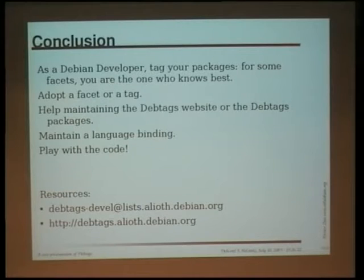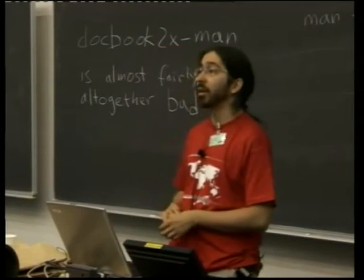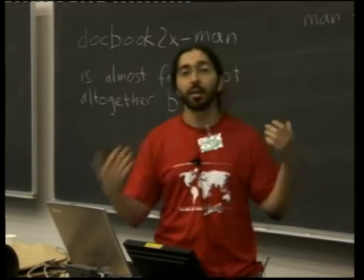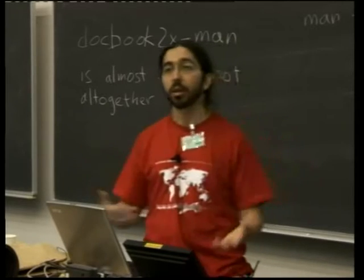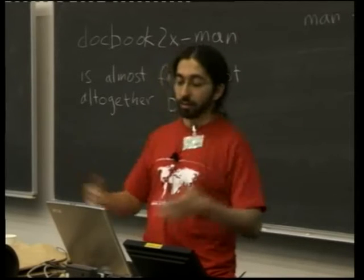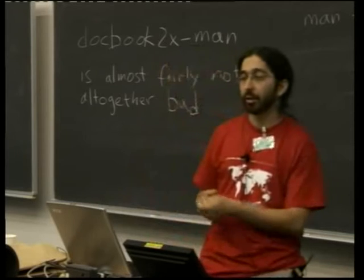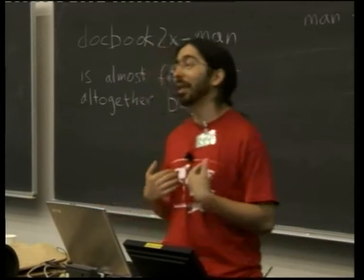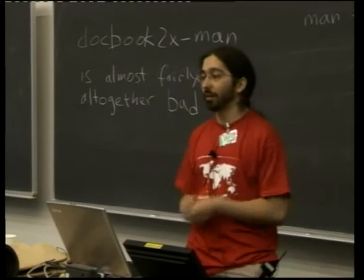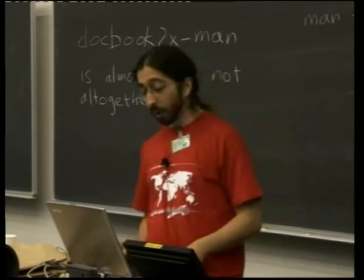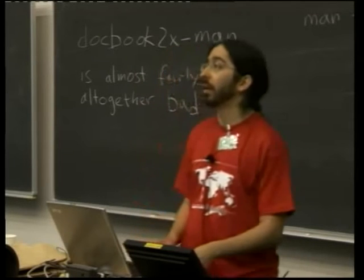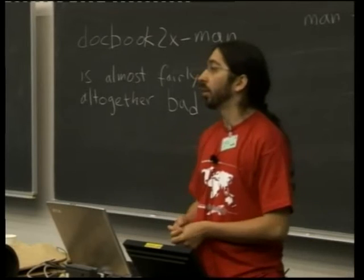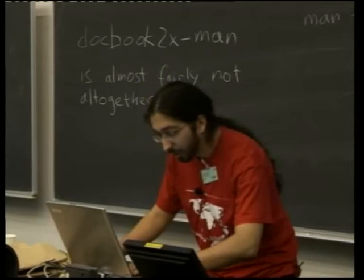Adopt a facet or tag — we can not only adopt packages but also facets or tags. For example, if you are an artist who knows about everything to do with images, you can adopt the 'works with image' tag and make sure that packages which deal with images actually have that tag. Also, help with the website — totally underdeveloped. The core packages are very well maintained because I do it, but I tend not to have time to maintain six packages which depend on each other, maintain a language binding, and play with code to find smart things with interfaces. There's a nice 'play with code' opportunity.